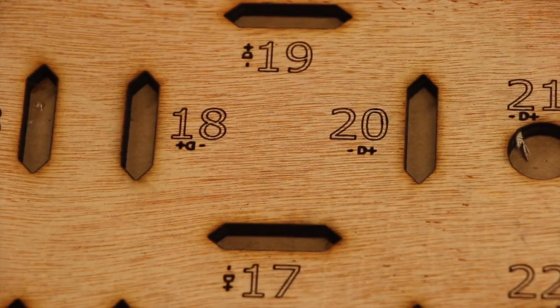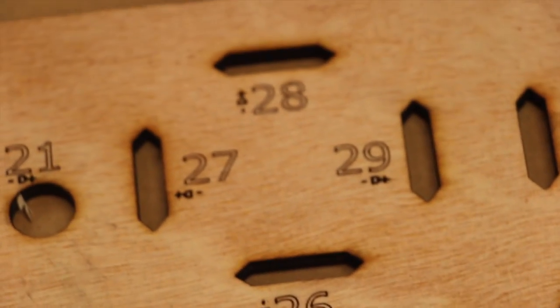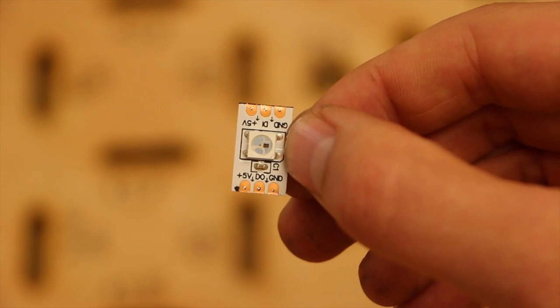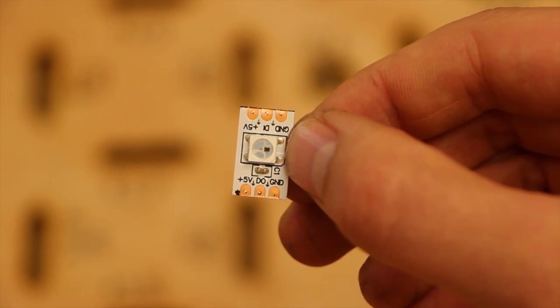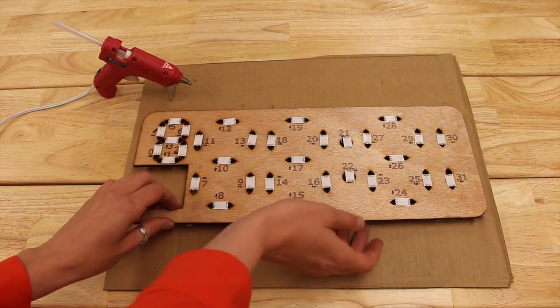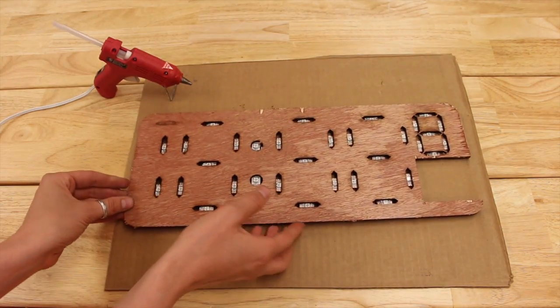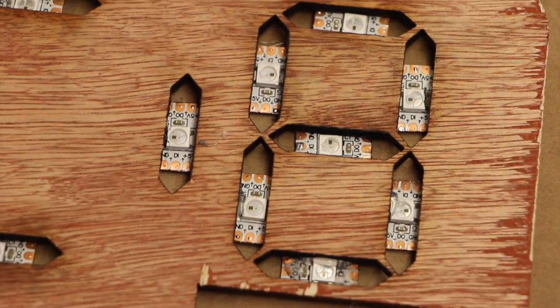The neopixel layer has numbers etched into the wood to indicate the order in which the LEDs must be wired together to match the code. When gluing or soldering, make sure the neopixel arrow always points to the next pixel. When you're done gluing, flip the layer over and verify that the neopixel arrows point in a continuous path following the etched numbers.